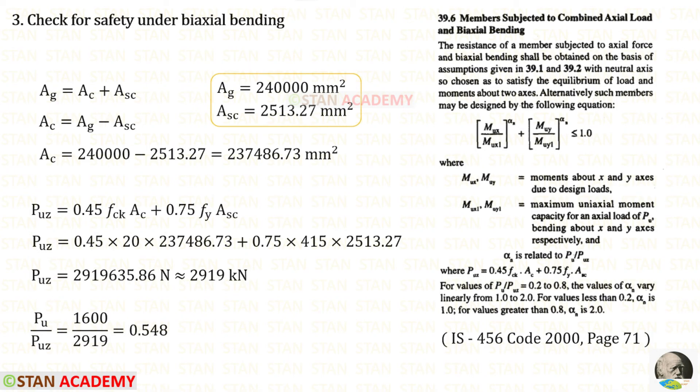We know that the gross area is area of the concrete plus area of the steel. So, area of the concrete will be Ag minus Asc. We know the values of Ag and Asc. Let us apply them so that we will get Ac. Let us open this code book page number 71. Let us write this equation. In this equation, let us apply the values. For Puc, we will get this.